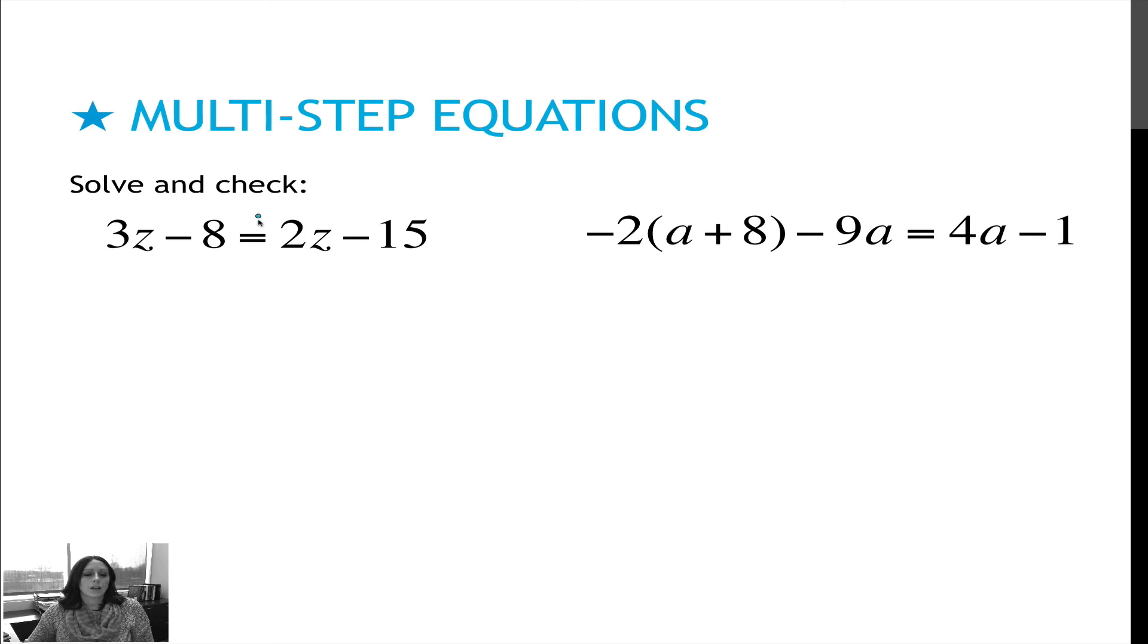Last few for us to try. Again, draw the wall. On the left side of the equation, I have 3z. On the right side, I have 2z. So I'm going to choose to subtract 2z because I want to deal with positives. So 3z minus 2z is 1z or just z. Bring down minus 8. Bring down minus 15. Now I'm going to start on the side with the z, but furthest away. So the minus 8 has to go by adding 8. And that gives me z equals negative 7.